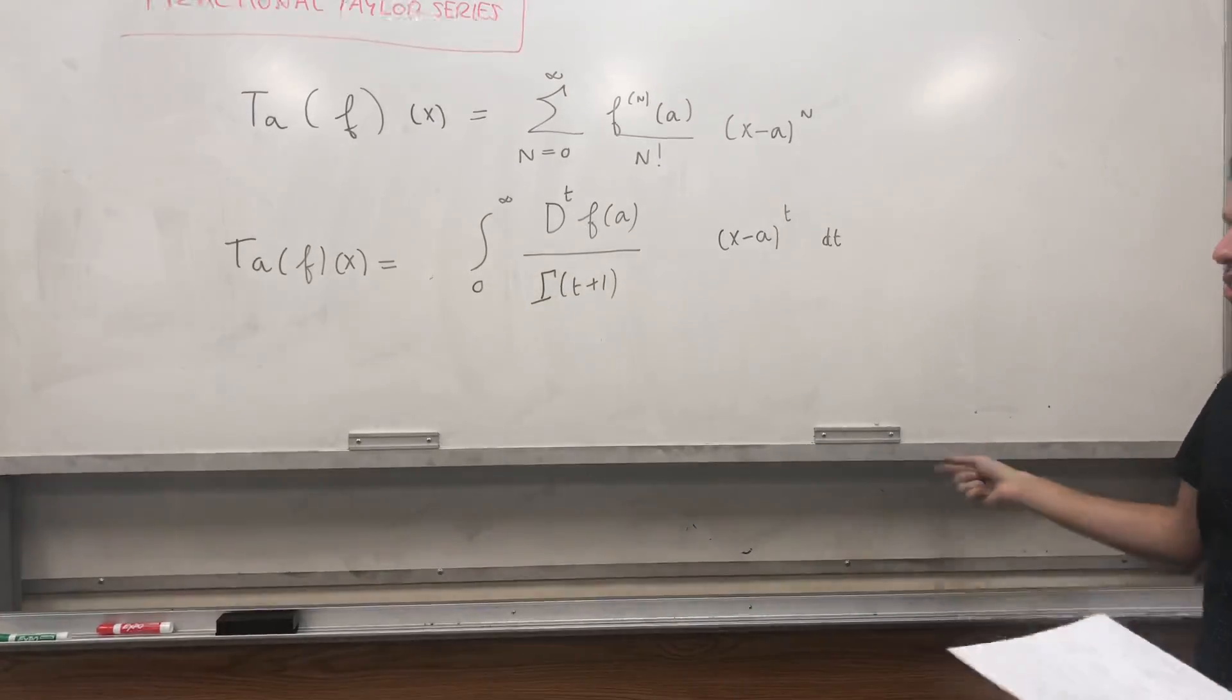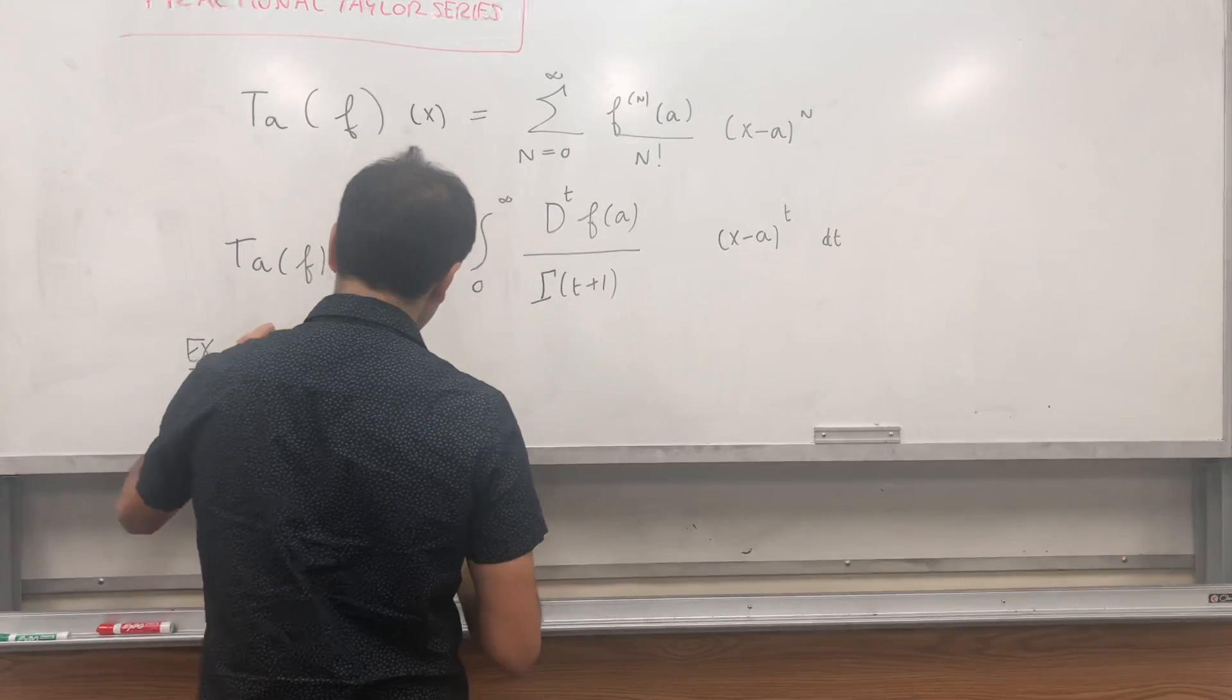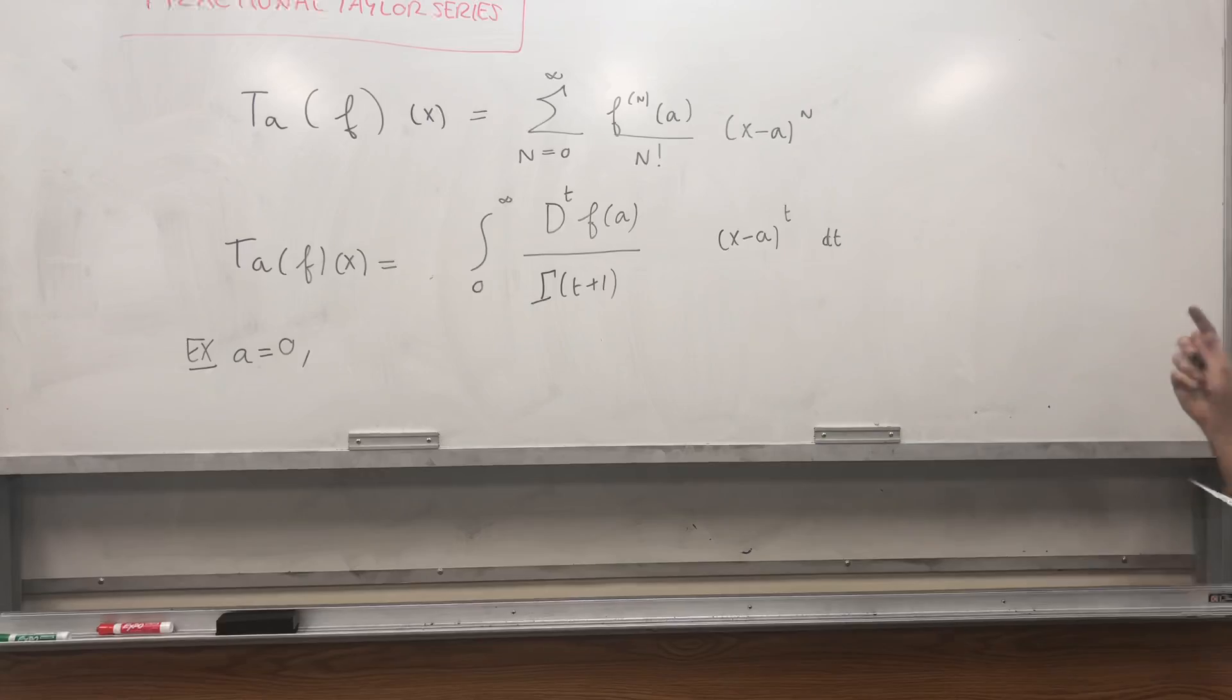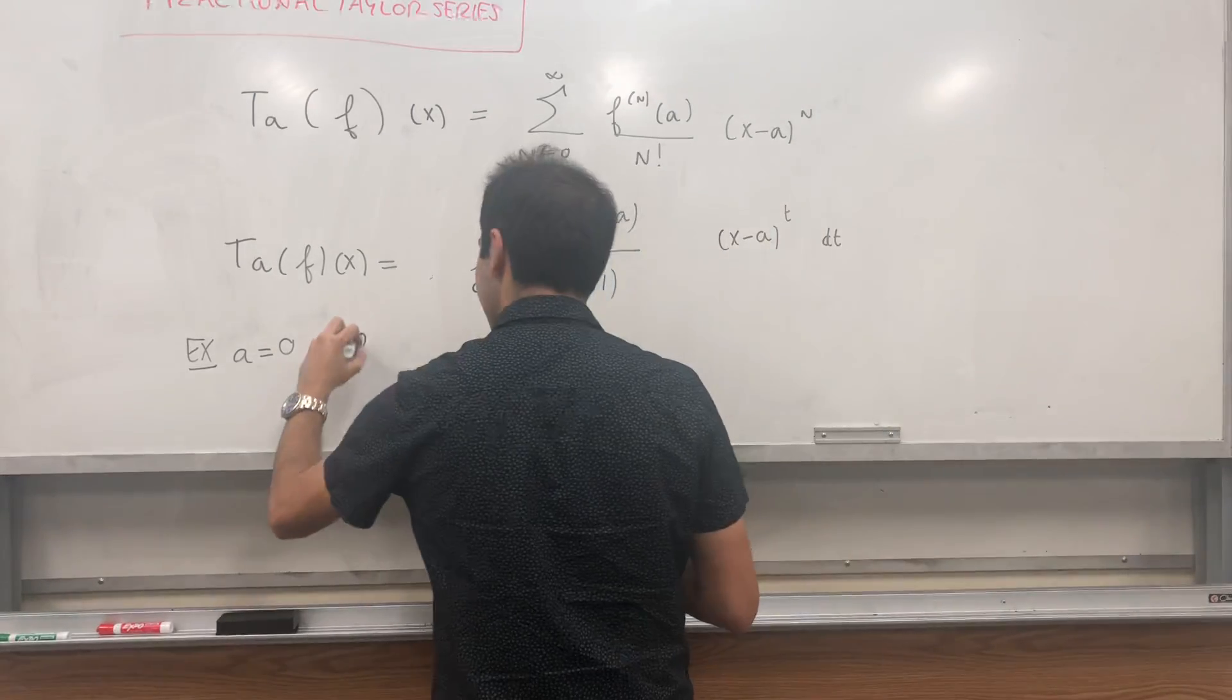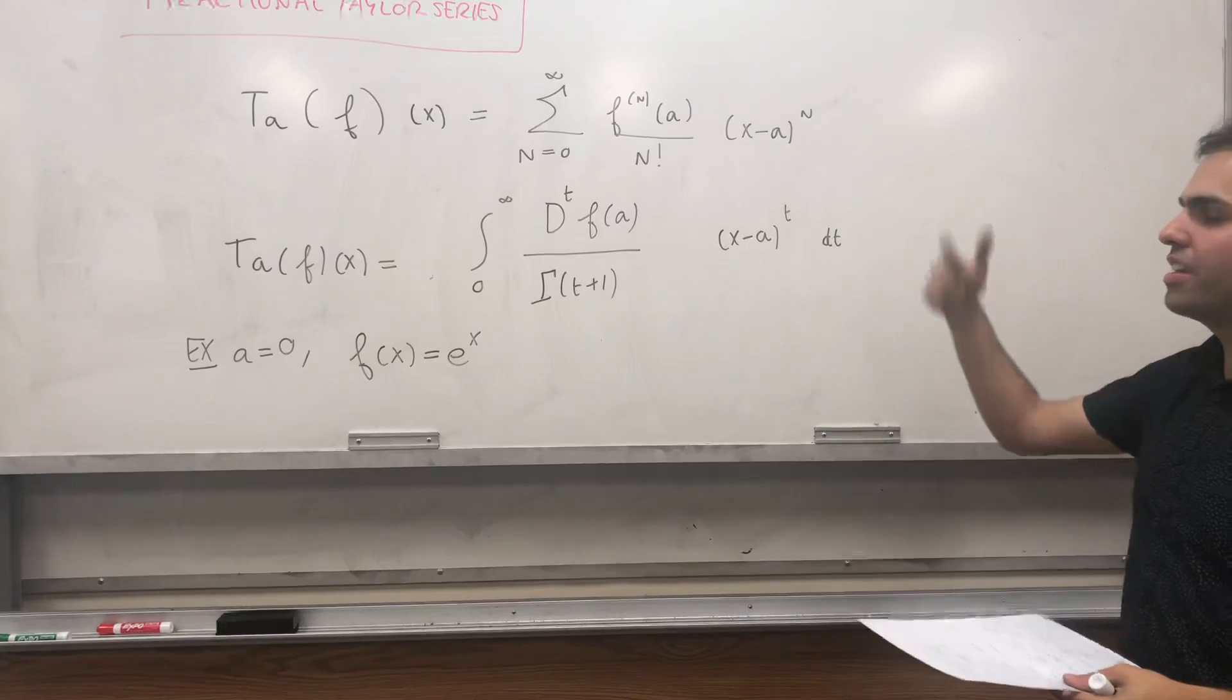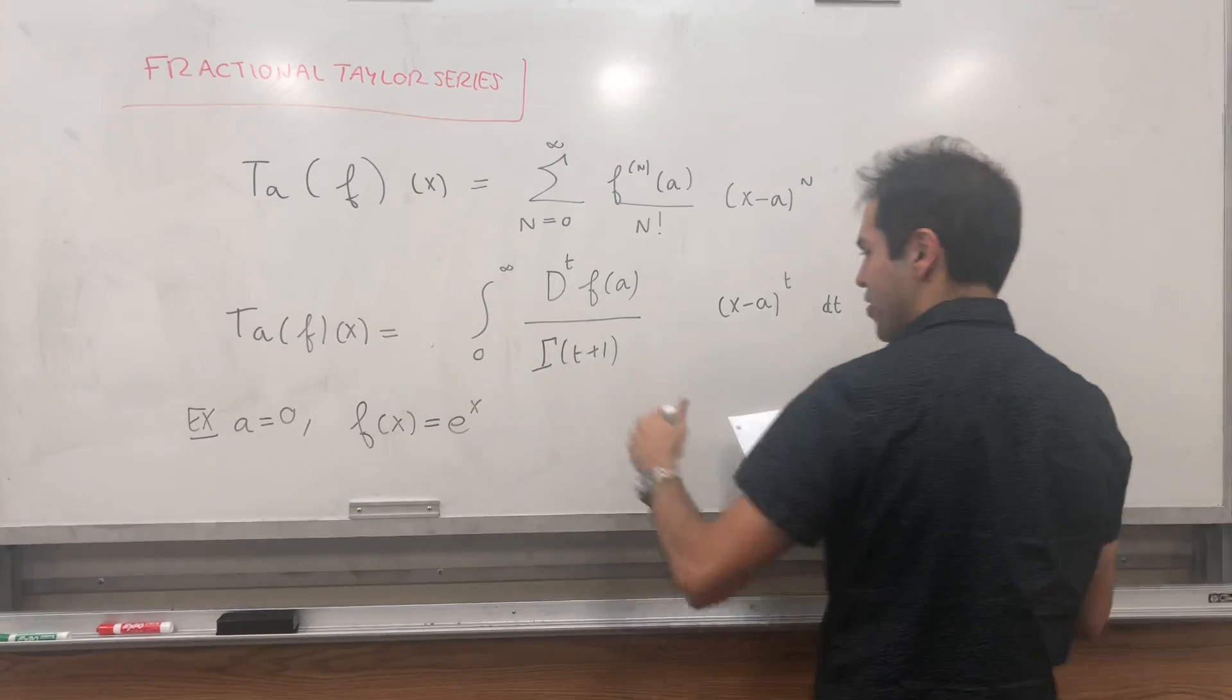So in particular, if you consider the Maclaurin series, let's have a be 0. And let's say you consider the function, well, if a is 0, we get a Maclaurin series. And let's also, for today, consider the special function e to the x. And I think it works for, what I'm going to show works for any power of e to the x. So e to the kx for any k. And in particular, in this case, what's the Taylor series? Or I guess the Maclaurin series?